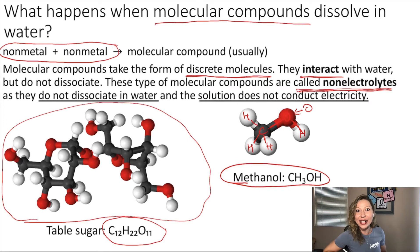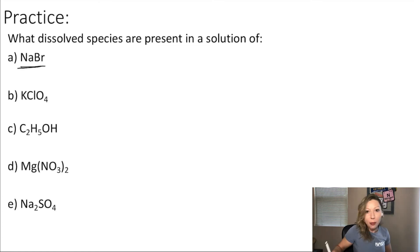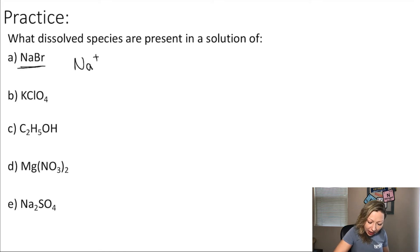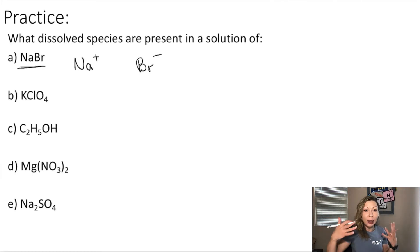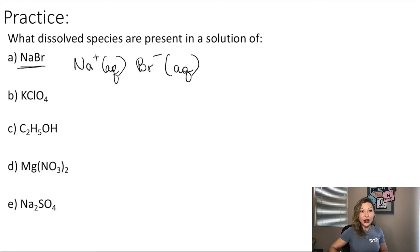Let's take a look at a practice problem: what dissolved species are present in a solution of the following? Sodium bromide — when sodium bromide dissolves in water, it dissociates because it is an ionic compound. It dissociates into Na⁺ and Br⁻ (bromide) ions. You can represent ions in an aqueous solution by adding (aq) after the ion, just showing that it is dissolved in water.